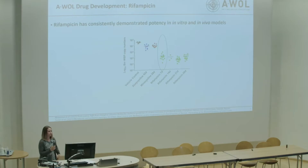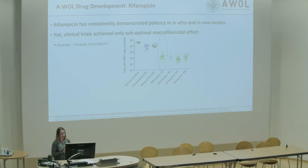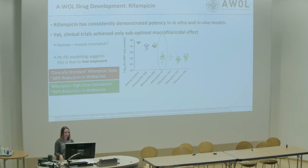Some highlights about rifampicin: we knew it had good potency in vitro and in vivo, but this didn't translate to clinical trials as expected. We investigated whether this was due to a human–mouse PK mismatch — similar to problems seen with schistosomiasis — and found that humans have lower drug exposure than mice. Further work showed that at the standard clinical rifampicin dose, historically set when rifampicin was semi-synthetic and expensive, you only get a 58% reduction in Wolbachia.